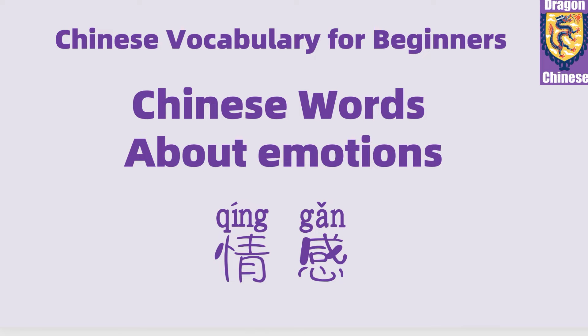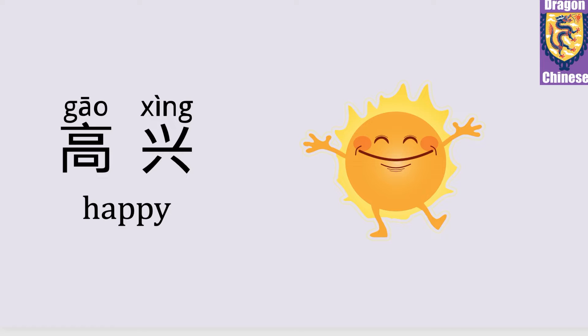Chinese Vocabulary for Beginners. In this lesson, we are going to learn some Chinese words about emotions. 情感 means emotion. 情感. 高兴 means Happy. 高兴.